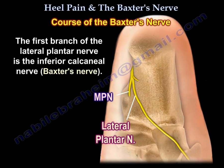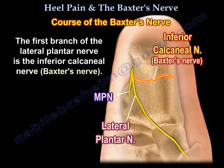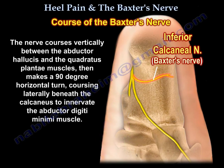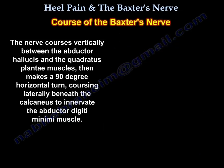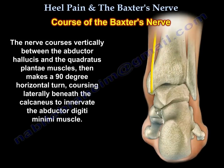The first branch of the lateral plantar nerve is the inferior calcaneal nerve — Baxter's nerve. The nerve courses vertically between the abductor hallucis and the quadratus plantae muscles. It then makes a 90-degree horizontal turn, coursing laterally beneath the calcaneus to innervate the abductor digiti minimi muscle.